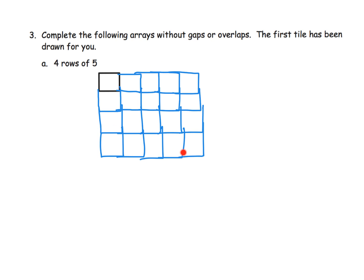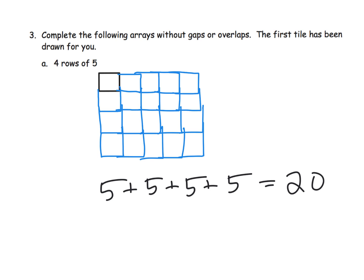There you go. Now the question doesn't ask, but go ahead and say, 'What is our repeated addition?' We could say there are four rows of five, so there's five here, five here, five here, and five here. Our repeated addition would be five plus five plus five plus five, which equals twenty.